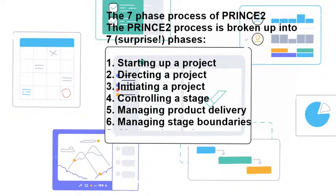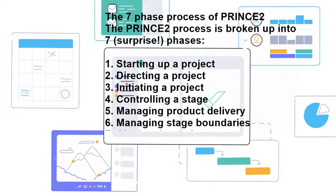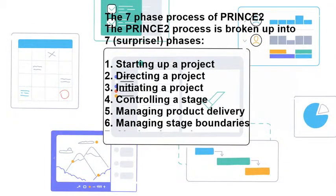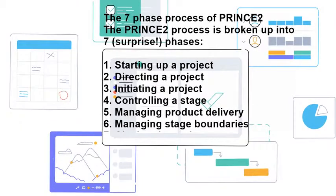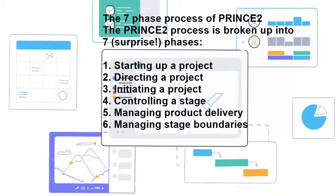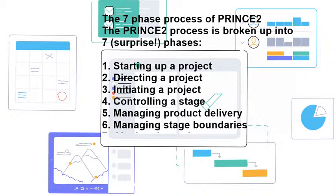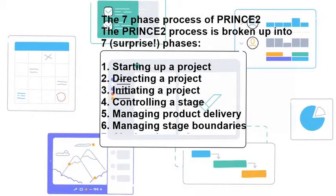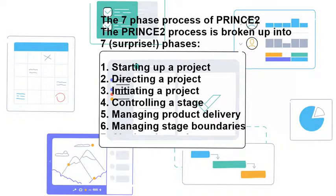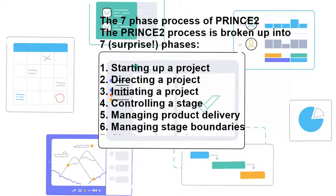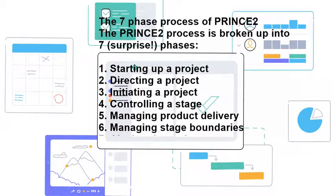The second phase is Directing a Project. The project board reviews and evaluates project briefs based on business justification and viability for another round of approval or disapproval. The project board decides what it needs to do in order to organize and execute each approved project, and how they're going to delegate to the project manager.